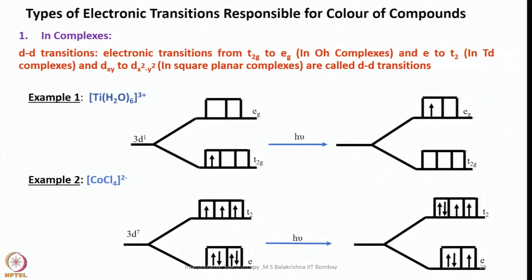Based on crystal field splitting, the degeneracy of the orbitals is destroyed and they align into different energy levels. In the tetrahedral case, dx²-y² and dz² will be lower in energy, whereas dxz, dyz, and dxy will be higher in energy, and the transition takes place between them.